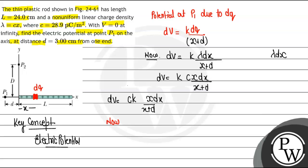Now, potential due to the whole rod is going to be what? So V is going to be CK times integration from 0 to L, and this is x dx upon x plus D.